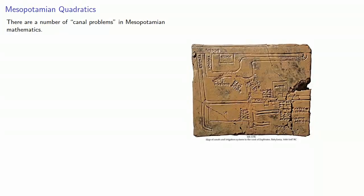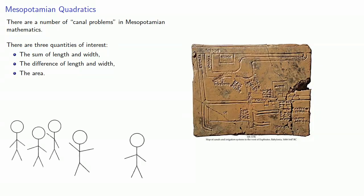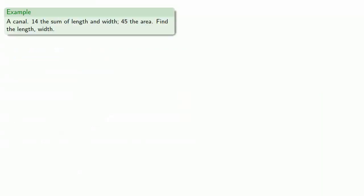If you're digging a canal, there are a number of quantities of interest, and in these canal problems there are three of particular significance: the sum of the length and width, the difference of length and width, and the area. Admittedly, calling this a practical problem is something of a stretch — the actual scribal problems involved units and required some unit conversions. A typical canal problem looks something like this: a canal, 14 the sum of length and width, 45 the area — find the length and width.